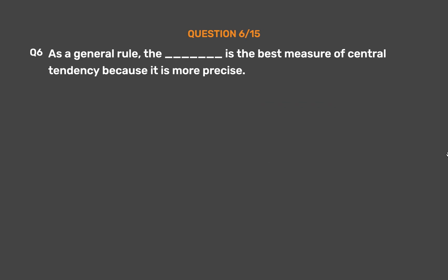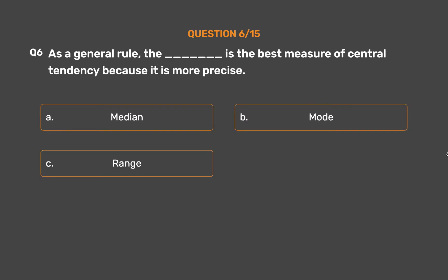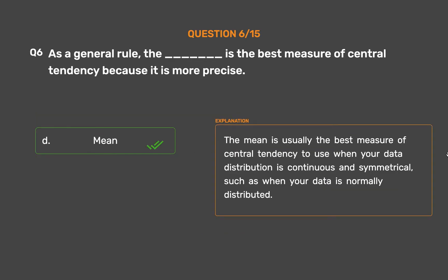Question number 6. As a general rule, blank is the best measure of central tendency because it is more precise. Option A: Median. Option C: Range. Option D: Mean. The correct answer is Option D: Mean. The mean is usually the best measure of central tendency to use when your data distribution is continuous and symmetrical, such as when your data is normally distributed.